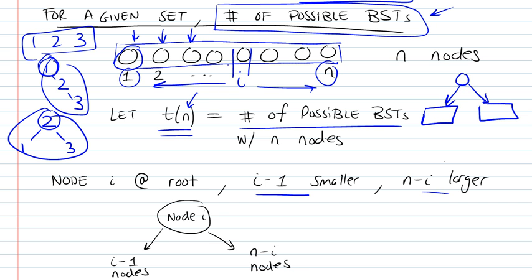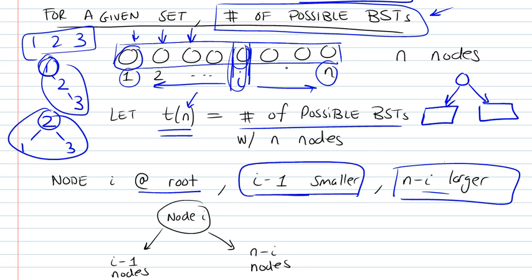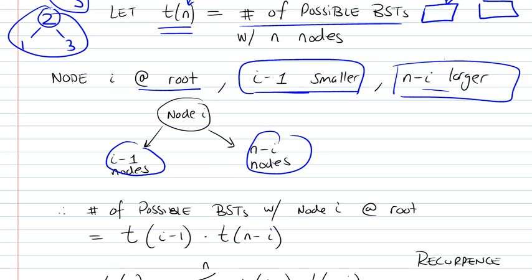Let's assume we were looking at element i here, and we were to place this as our root. We will have i minus 1 elements smaller than that particular element since they are all ordered and sorted, and then we will have n minus i elements that will be larger. These will all be placed in the right subtree, and the i minus 1 nodes will be placed in the left subtree.